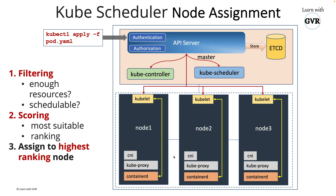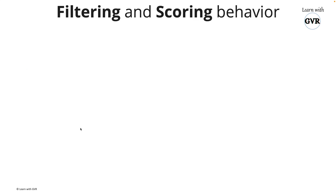After ranking, the scheduler assigns the pod to the highest-ranking node. Everything happens in the form of stages. For example, if the pod is placed on node 2, the two key steps behind the scenes are filtering and scoring.